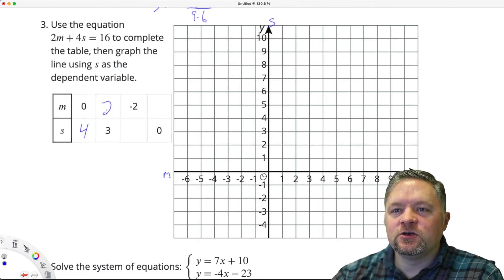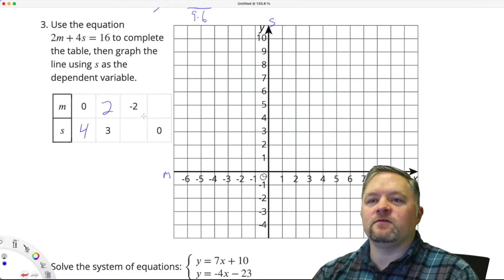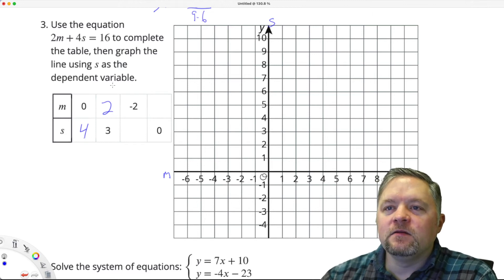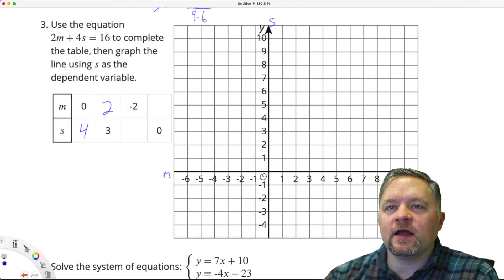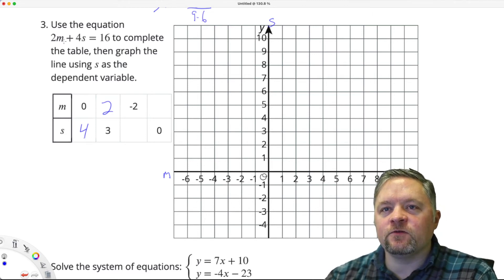Plug in negative 2 for M. 2 times negative 2 is negative 4. Negative 4. I would have to add 4 to each side.